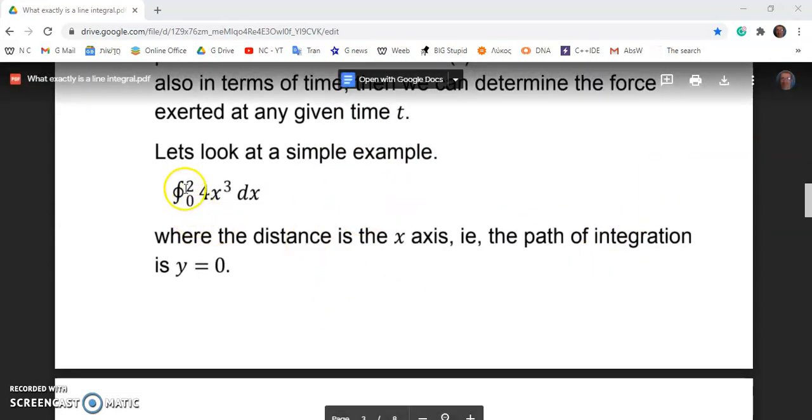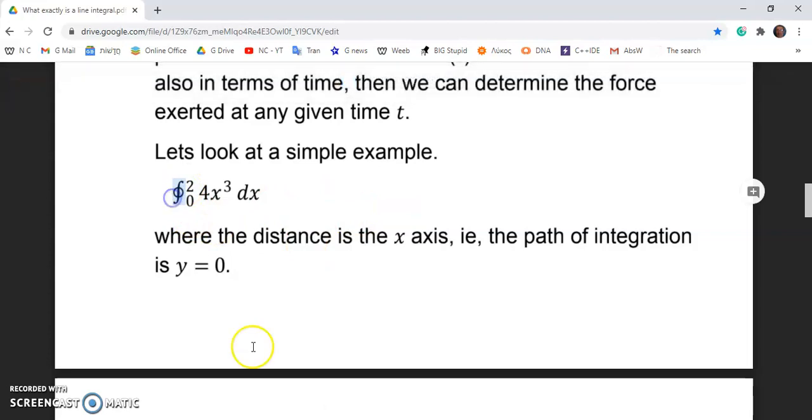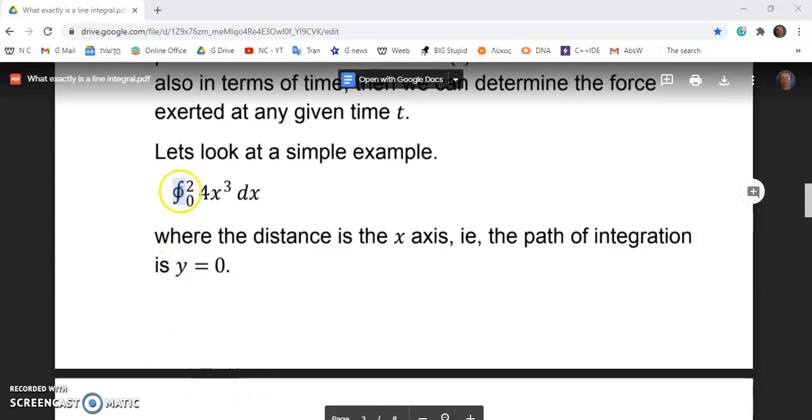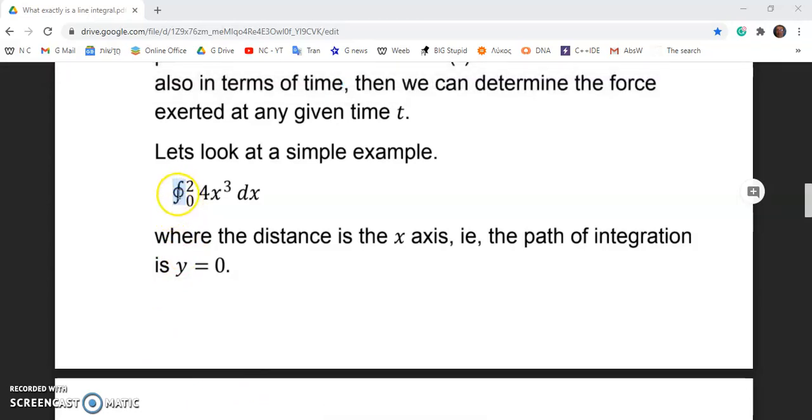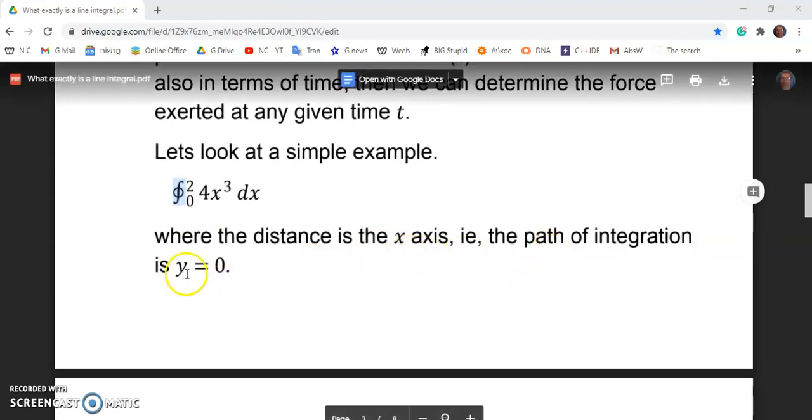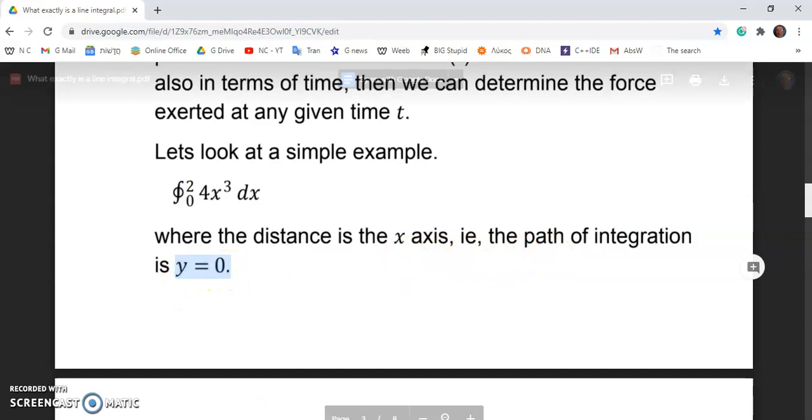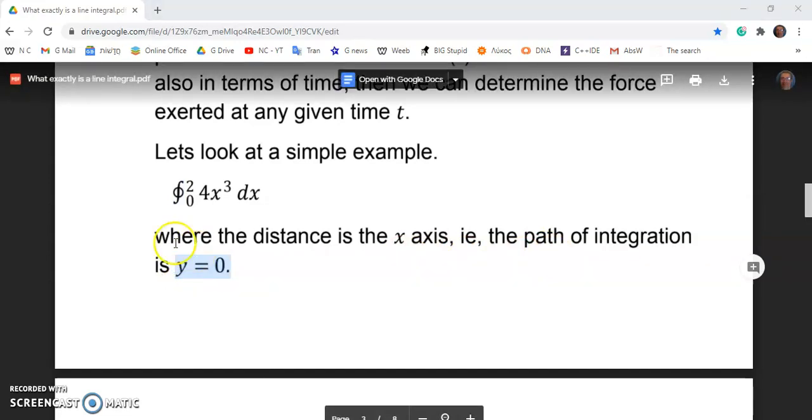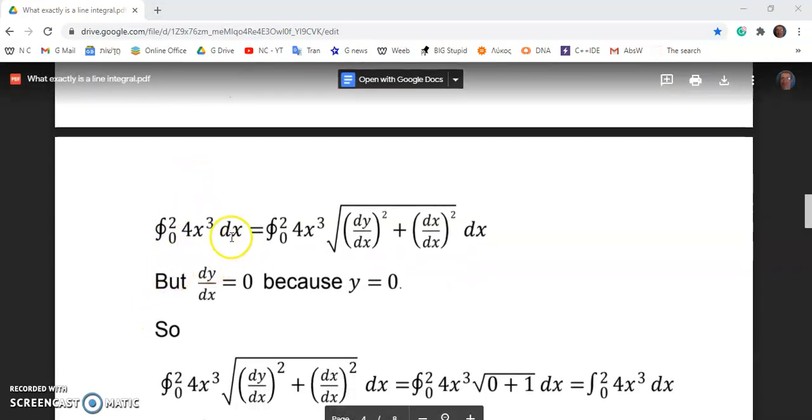So let's look at a simple example. So this sign here means a line or contour integral. You don't have to write the circle anymore, but generally we do that when we're dealing with a path integral or a line integral. And every standard integral is in effect a line integral because it's evaluated along the x axis. So the path of integration is the x axis.